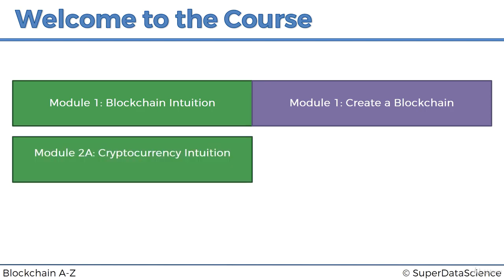Then we'll move on to Module 2, which consists of two parts in terms of the intuition. Module 2A is the Cryptocurrency Intuition, where you will find out all of the fundamentals of how cryptocurrencies work. And Module 2B is the Cryptocurrency Transactions Intuition, where we will dig even deeper into how transactions work for cryptocurrencies. Basically Module 2 will be building upon what we learn in Module 1, helping us delve deeper into the application of blockchain, one of which is cryptocurrency.